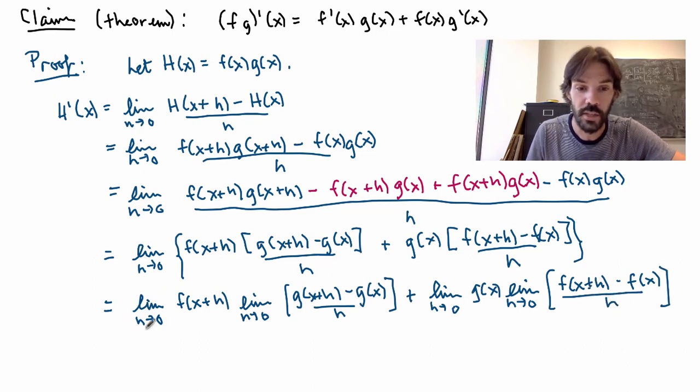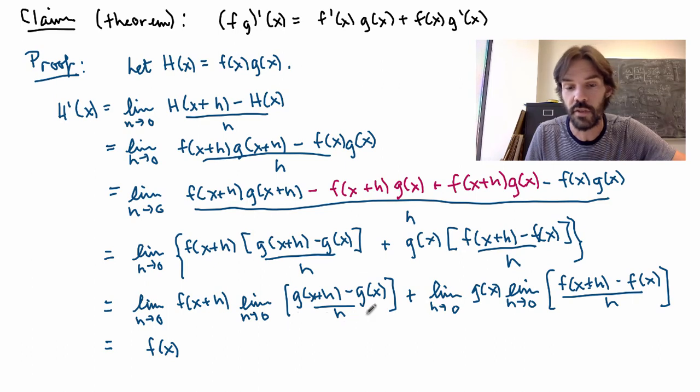Now you see what happens. Well, the limit as h goes to zero of f of x plus h is actually just f of x. I can just set h to zero. That's because I'm assuming that the function is differentiable, which implies that it's continuous, so we'll see more about that in a few minutes. So I get f of x here. And then here the limit is really just the definition of g prime of x. So that's what I get.